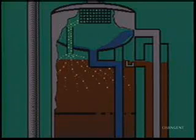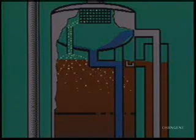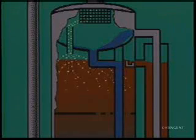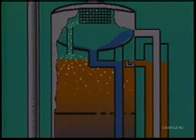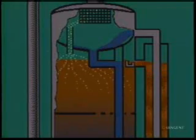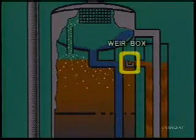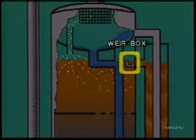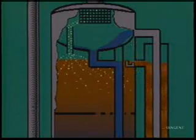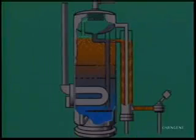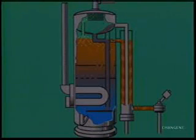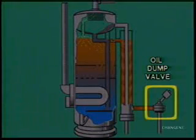Heat, chemicals, and gravity work together in the settling section, quickly breaking the emulsion. Finally, the clean oil flows out of the treater through a weir box — a dam-like structure which maintains liquids at a specified level. The oil flows down the outer shell of the heat exchanger, through the oil dump valve, and into a stock tank.